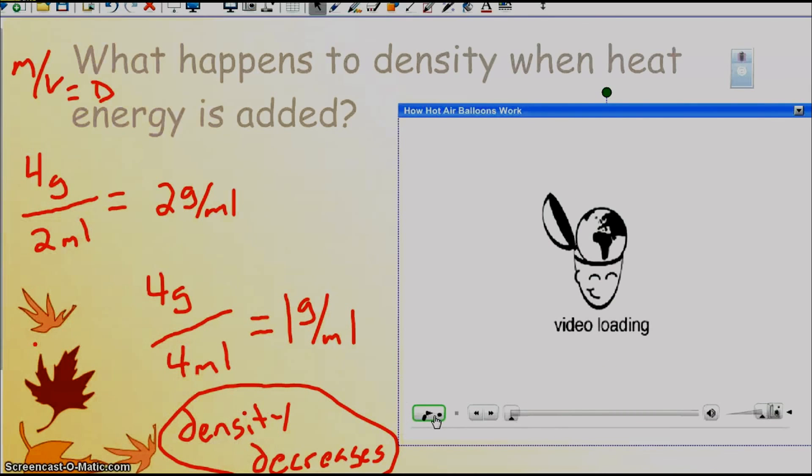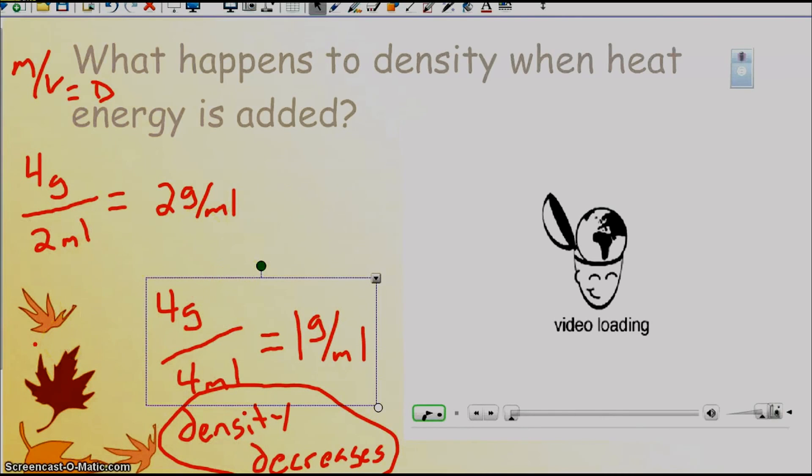All right, so that video shows us that when energy or when heat is added to matter it becomes less dense. Particles spread further apart, they're moving faster, they're moving more freely, and so that is what happens to matter when temperature or heat is added. All right, that's it and that's all for this video. Thanks for watching. Please ask a question at the end and bring that question with you to class tomorrow.